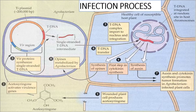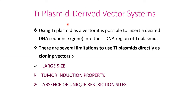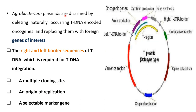Using Ti plasmid as a vector, it is possible to insert a desirable DNA sequence or gene into the T-DNA region of Ti plasmid. However, there are several limitations to using Ti plasmid directly as a cloning vector: its large size, tumor induction property, and absence of unique restriction sites. Agrobacterium plasmids are disarmed by deleting the naturally occurring T-DNA encoding oncogenes and replacing them with the foreign gene of interest.